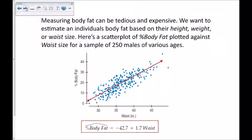So here's an example from the textbook. Measuring body fat can be tedious and expensive, and we want to estimate an individual's body fat based on their height, weight, or waist size. So we focus on the waist size, and here's a scatterplot of percent body fat plotted against waist size for a sample of 250 males of various ages. And so here you see the scatterplot and the line of best fit, and the equation for the line of best fit. This is all stuff that we did in our previous unit.